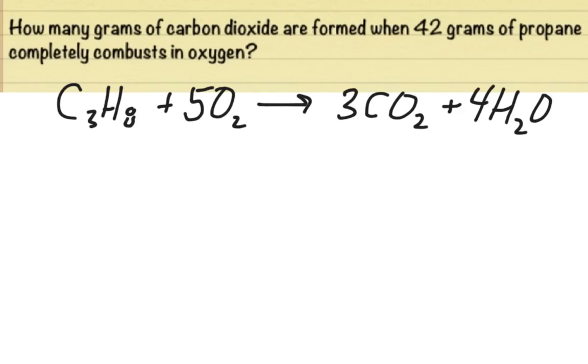So here's an example problem like that. Again, we're going to call on that same formula and problem that we've been using since the beginning. How many grams of carbon dioxide are formed when 42 grams of propane completely combust in oxygen? So again, your starting point is going to be 42 grams of propane, and our ending point is going to be grams of carbon dioxide.